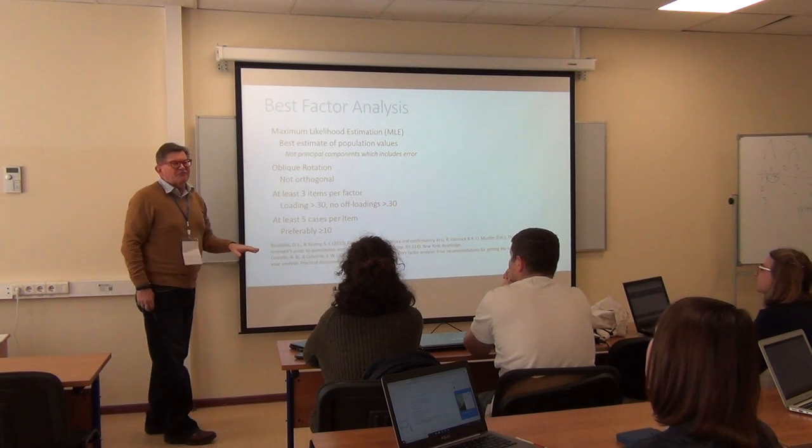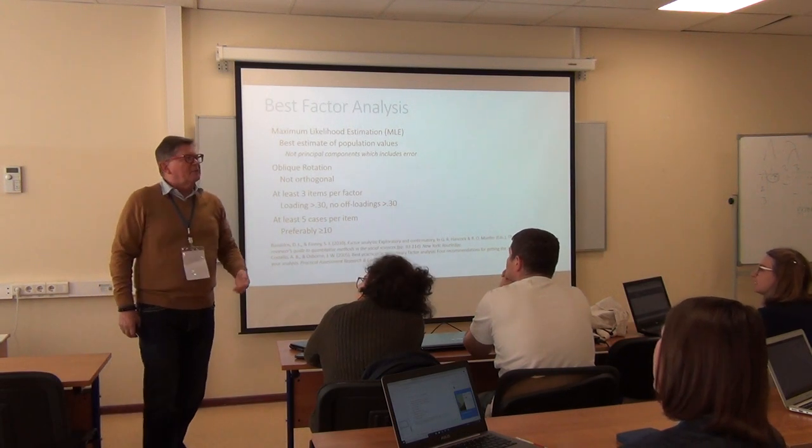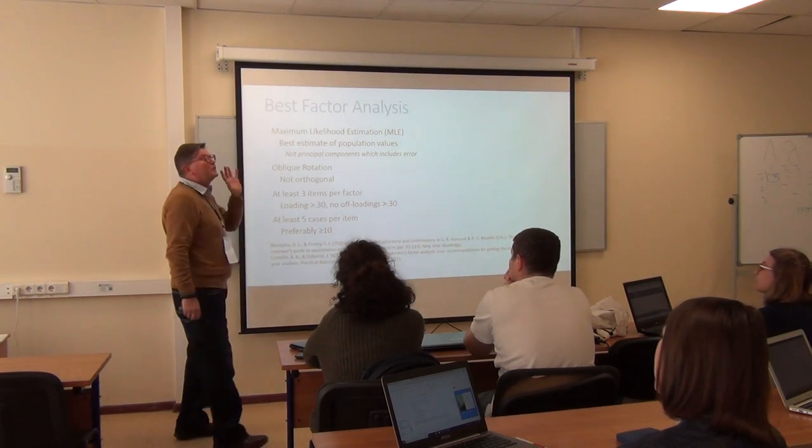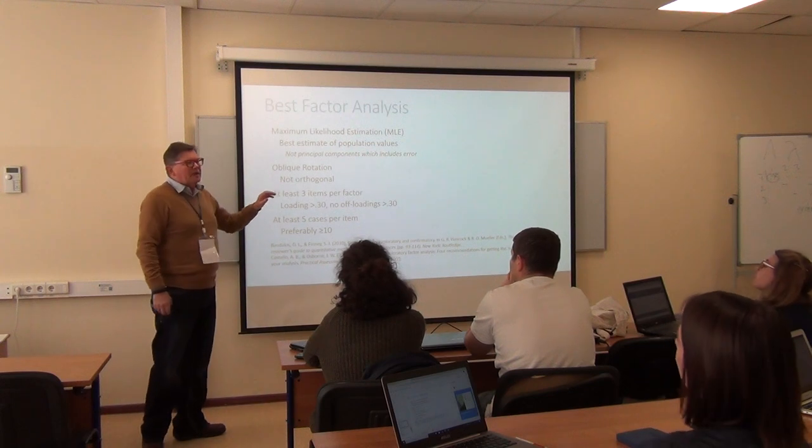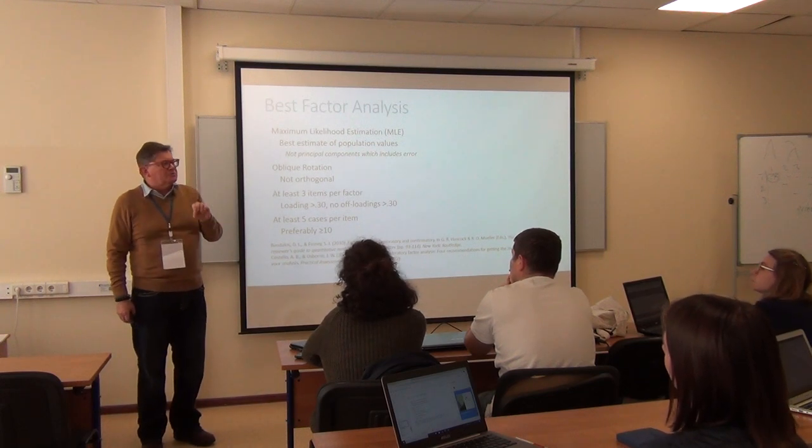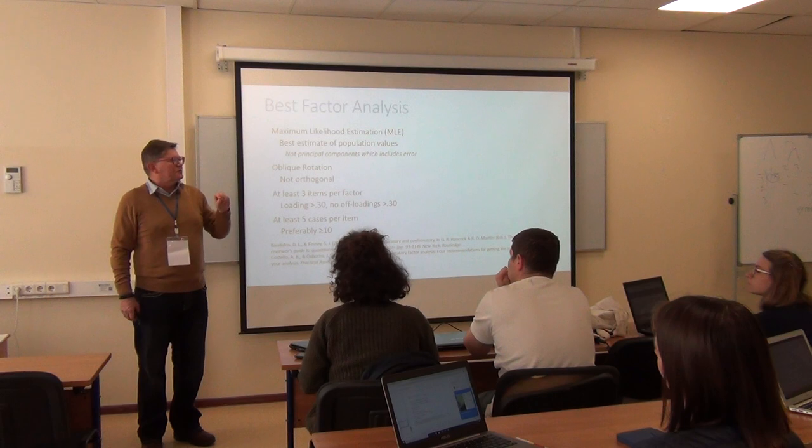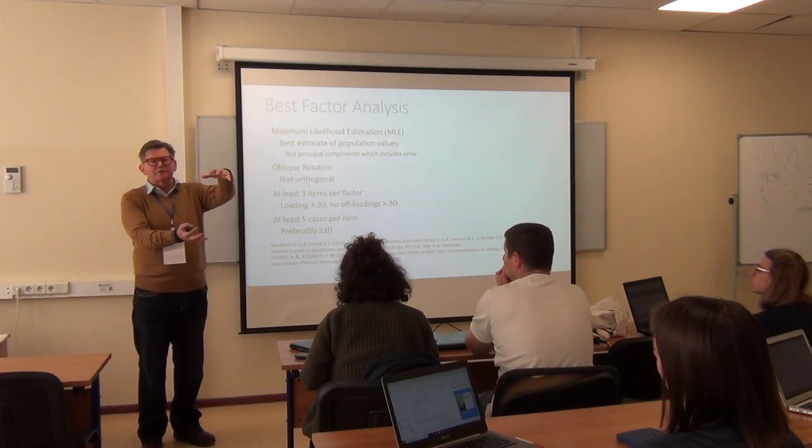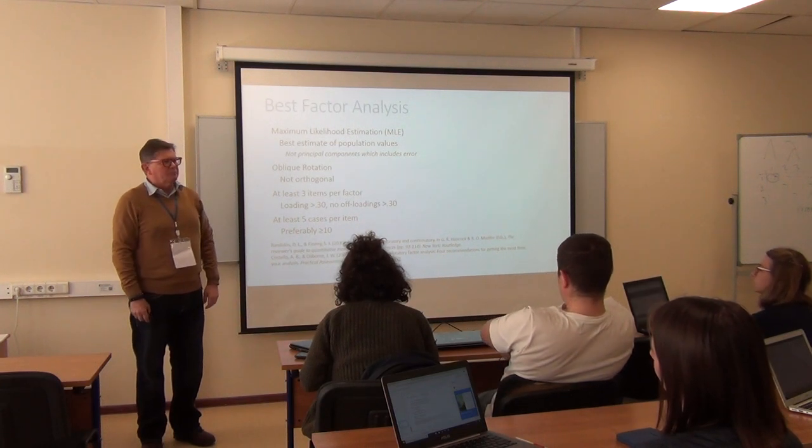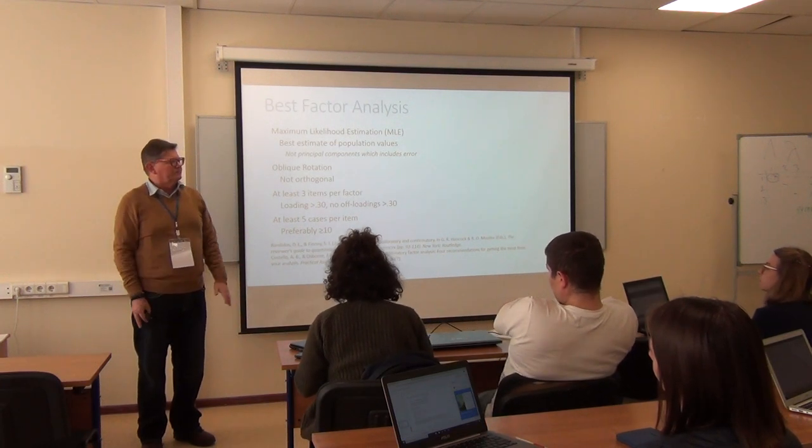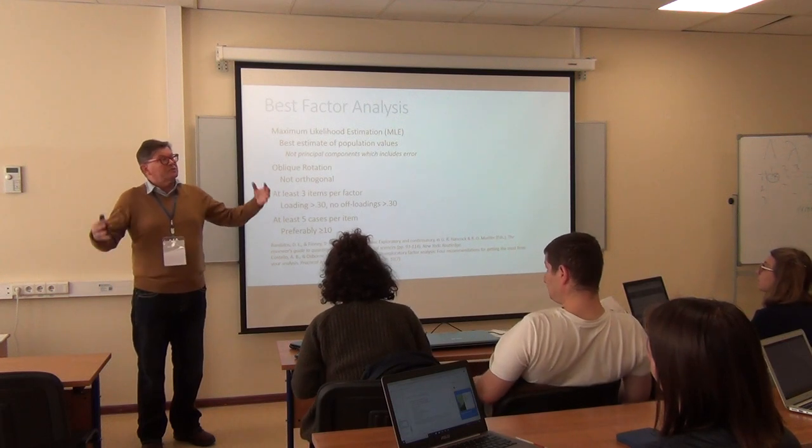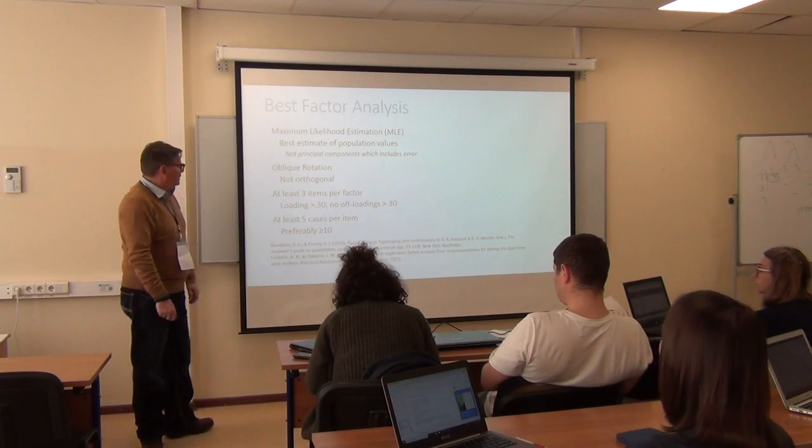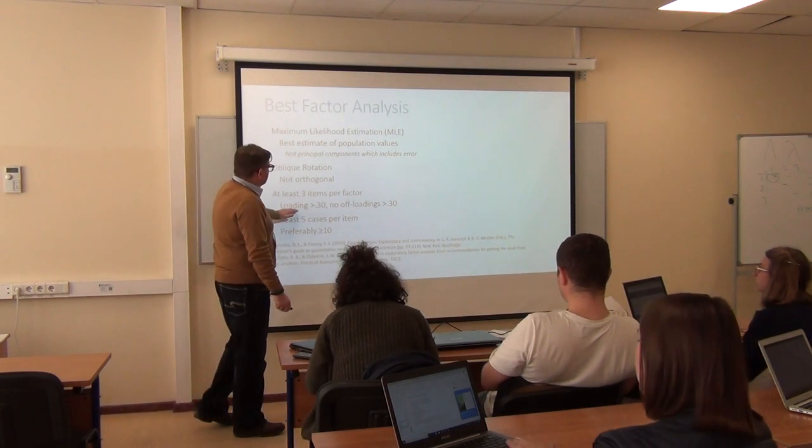Aim for three items per factor. But you saw yesterday that some of my factors don't have three items. I'll explain why we can get away with that. You can get away with it if you have a multi-factor inventory. But if you're just saying, here's a factor, you want three or more items. People will go, no, no, no, no, don't trust two. But if you have six factors all connected to each other, you can have a two-item factor in there.